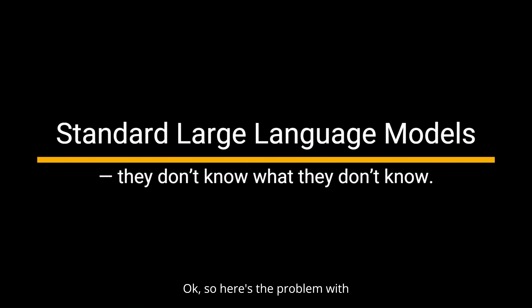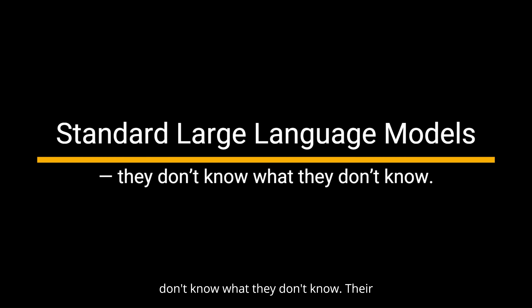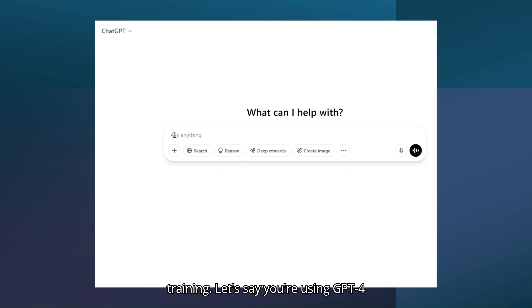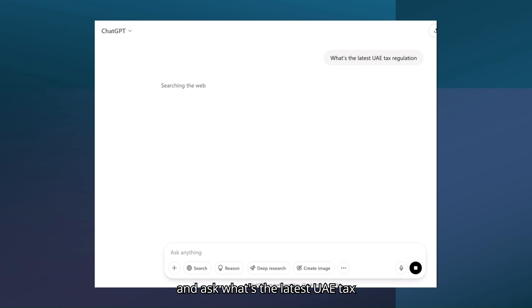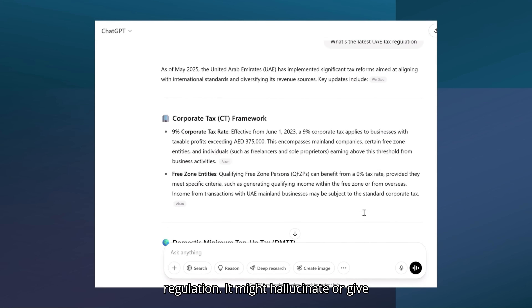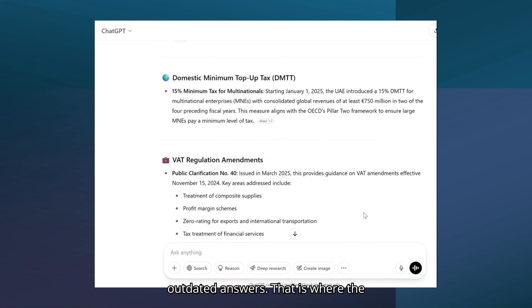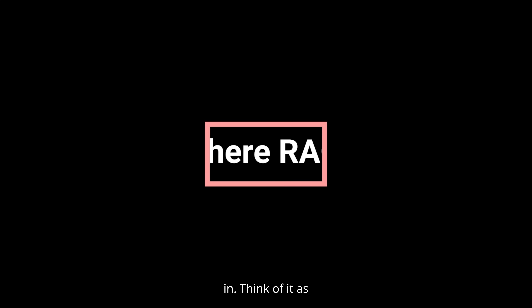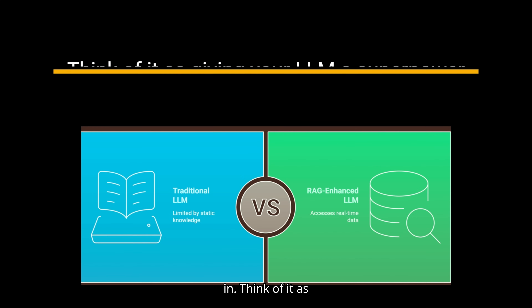Here's the problem with standard large language models: they don't know what they don't know. Their knowledge is frozen at the time of training. Let's say you're using GPT-4 and ask, 'What's the latest UAE tax regulation?' — it might hallucinate or give outdated answers. That is where retrieval augmented generation comes in.